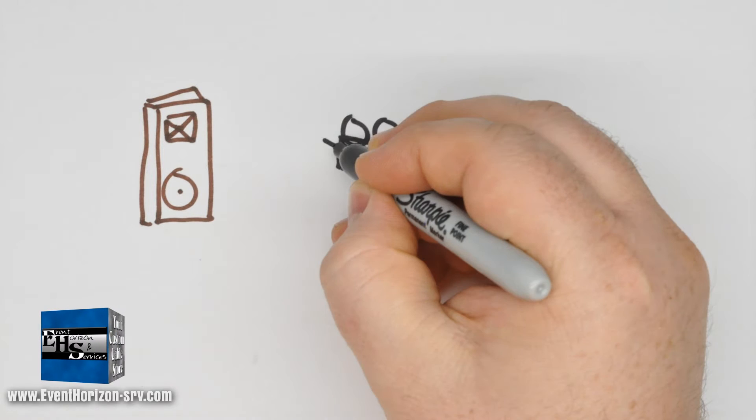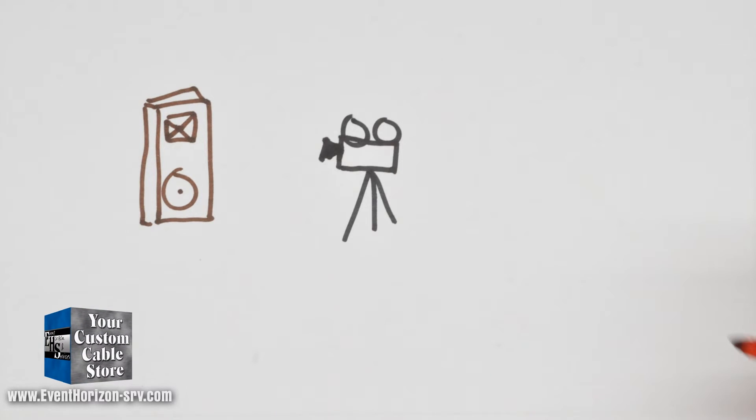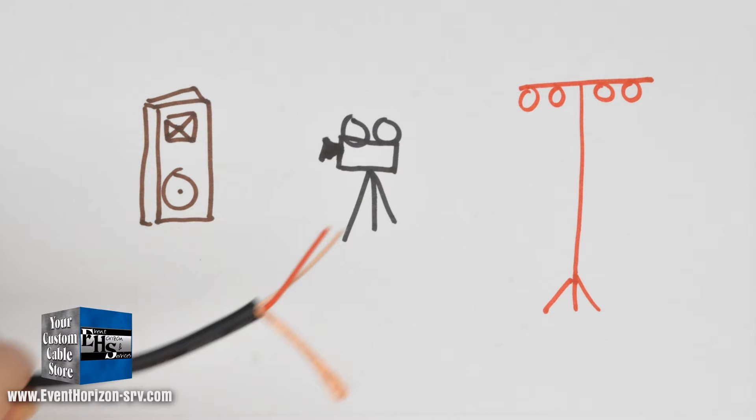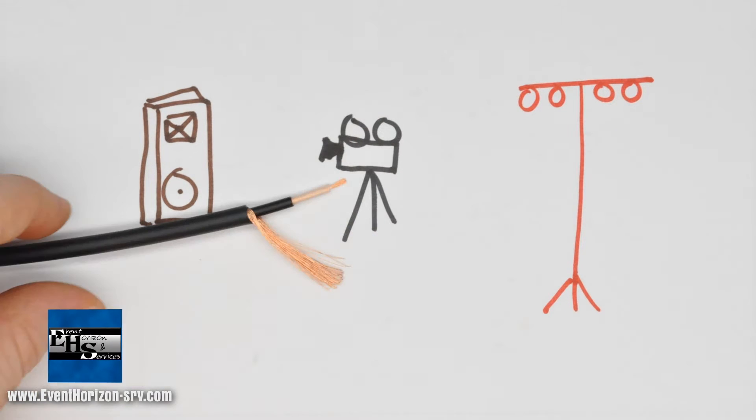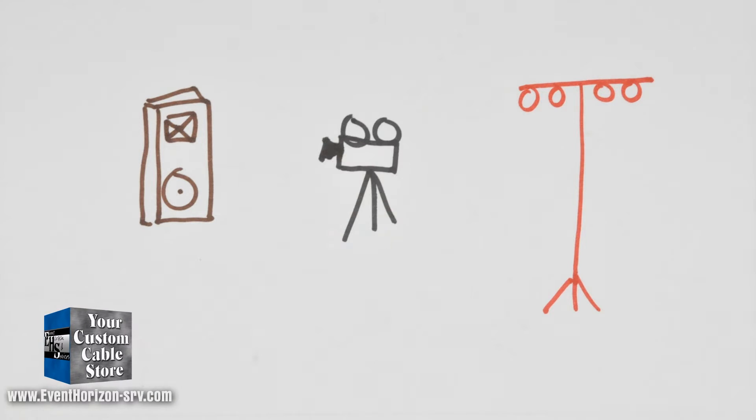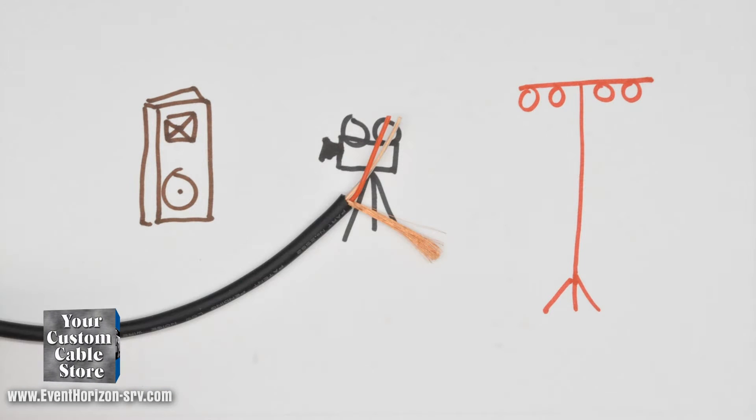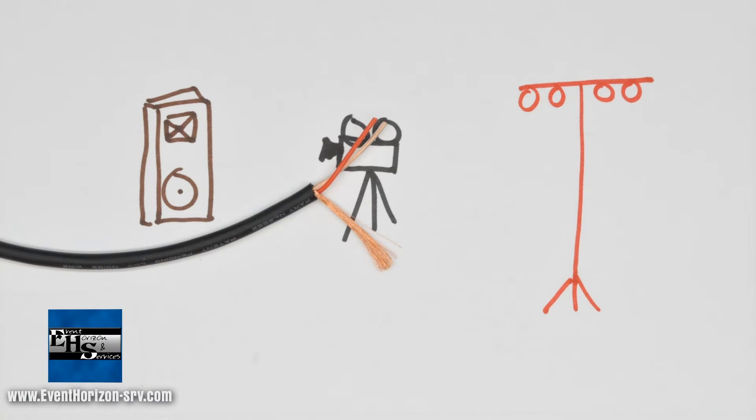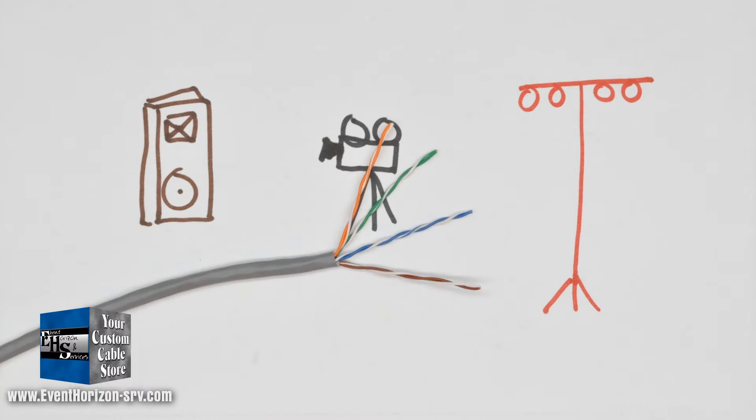If you're doing audio, video, or lighting, there are a couple main wire types you'll probably run into. These are microphone cables, instrument, speaker, unbalanced, digital, coax, DMX, cat, and snake.